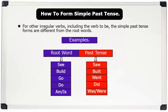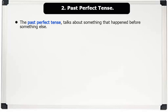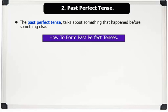2. Past perfect tense. The past perfect tense talks about something that happened before something else. How to form past perfect tense. Formula: had + past participle.